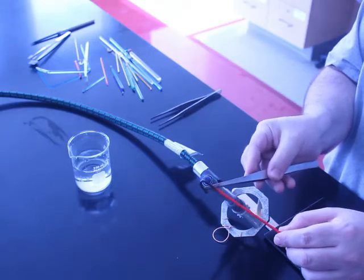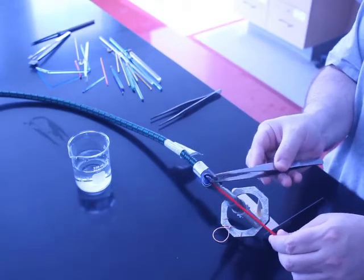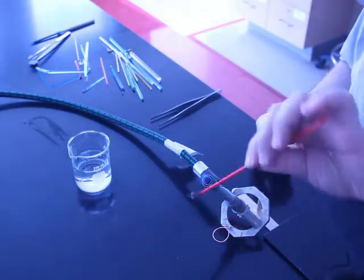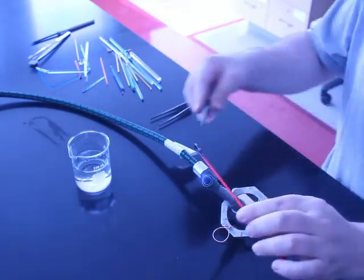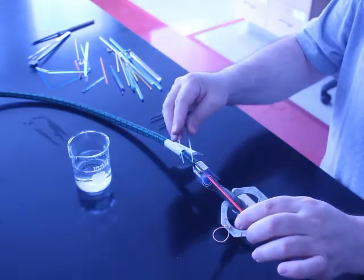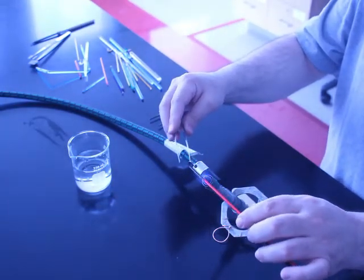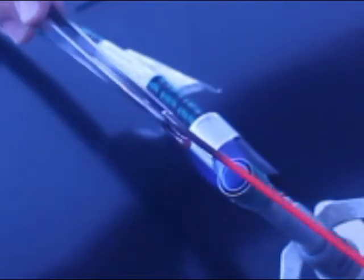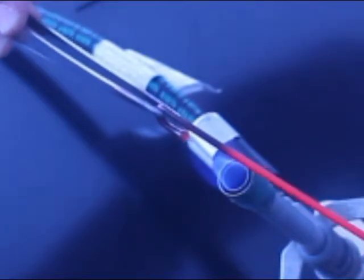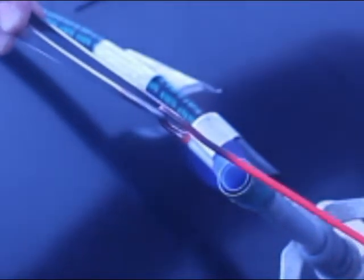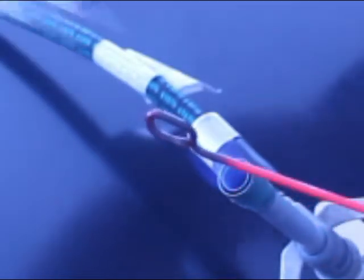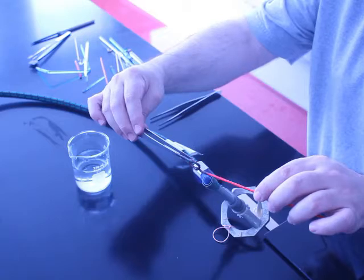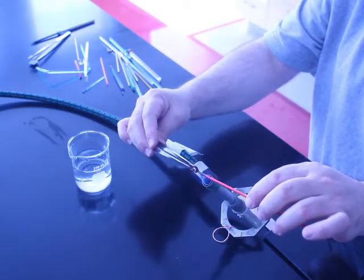At this point, I can use these tweezers to move it into whatever position I want. So I've got a little U, and now I can heat the other side. I come out of the flame so you can see what I'm doing better, and then I touch these two ends together, and now I have the beginning of a chain link.